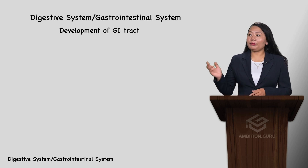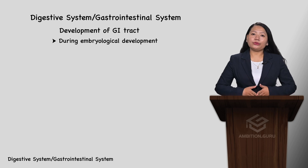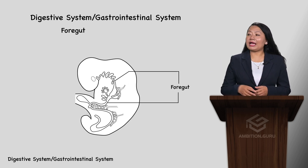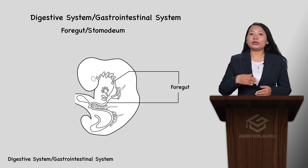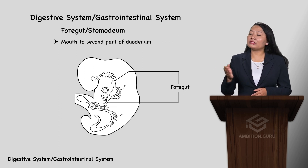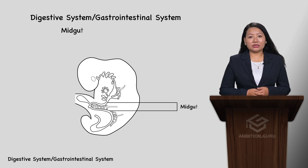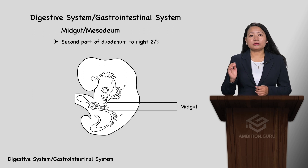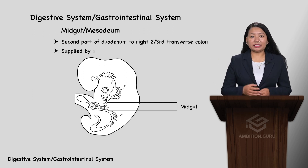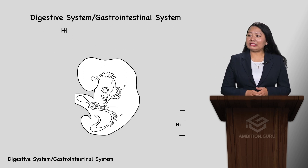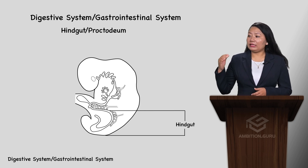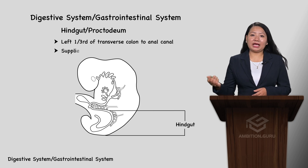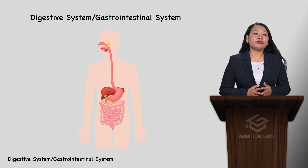During embryological development, the GI tract is present in a cylindrical form and is divided into three parts. The foregut, also known as stomodium, develops into structures up to the second part of the duodenum and is supplied by the celiac artery. The midgut, also known as mesodium, develops from the second part of the duodenum to the right two-thirds of the transverse colon, supplied by the superior mesenteric artery. The hindgut, also called proctodium, develops from the left one-third of the transverse colon to the anal canal, supplied by the inferior mesenteric artery.